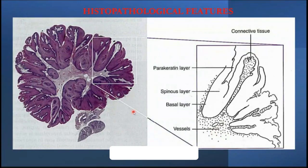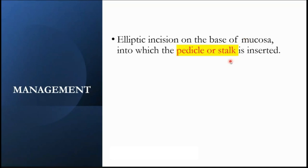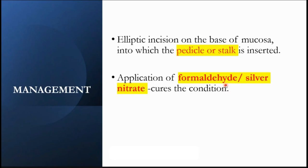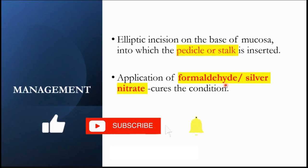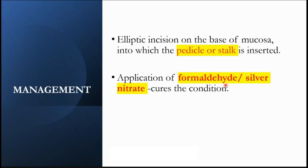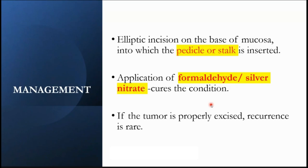For management — the lesion has a pedicle or stalk, so you have to do an elliptical incision and cut the base of that mucosa, otherwise it can regrow. You have to make sure you're removing the base along with the pedicle or stalk — that's the surgical treatment. There are also chemical treatments: similar to skin warts, oral papillomas can be treated by application of either formaldehyde or silver nitrate, prescribed by the dentist at the appropriate percentage. If the tumor is properly excised, recurrence is rare — it will not come back.